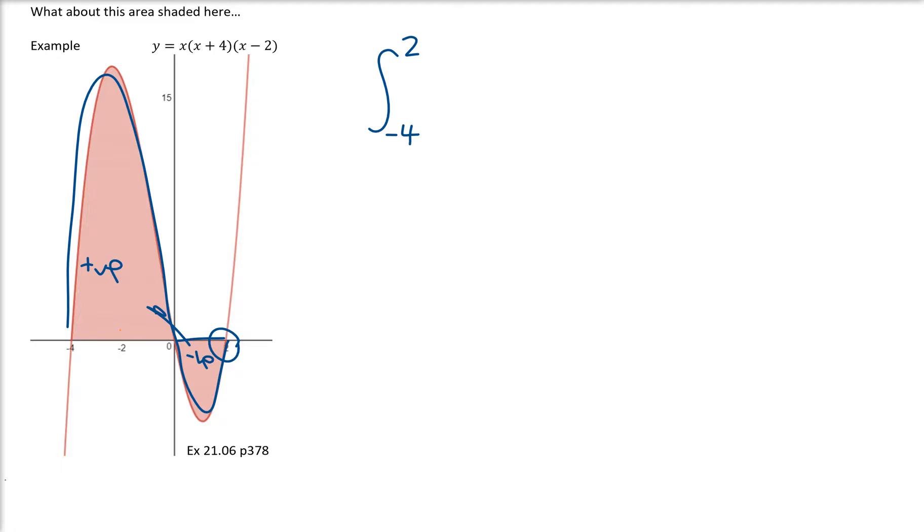So what do we need to do? We need to split this function that we're integrating with respect to x. We need to integrate it from 2 to 0 and we need to have the absolute value of that. So that's why I'm going to have the absolute value of that. We're going to add it to from 0 to negative 4 of the same function with respect to x. Does that give you the starting point of that particular question?